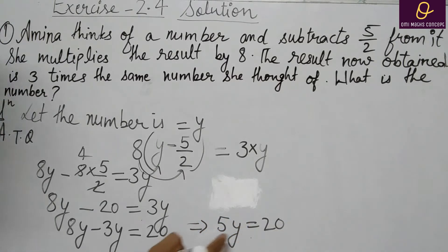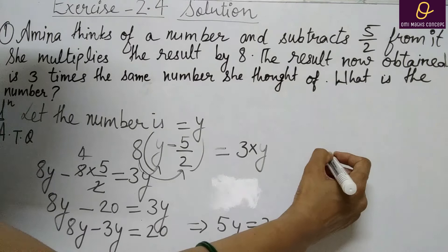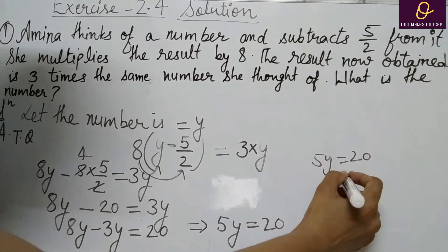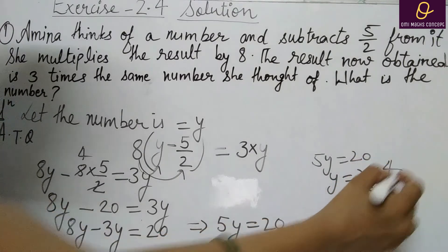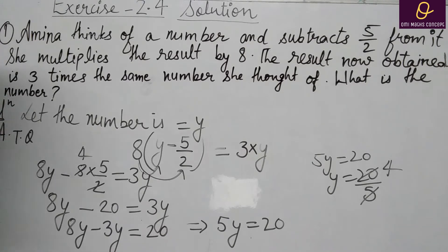अब 5 इसके साथ multiply है. जब आप transposing करेंगे, y equal to 20 by 5. 5 for the 20 — so the number Amina thought of is equal to 4. और यह लिखना आपको भूलना नहीं है.